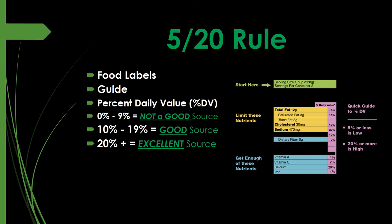Now it's time to talk about the 5-20 Rule. The 5-20 Rule is all about food labels — it's a guide that lets you know whether a food or beverage item is a good source of any particular nutrient. We're really talking about percent daily value, abbreviated as percent DV. Looking at a sample food label, it is divided into three main parts: purple, yellow, and blue.